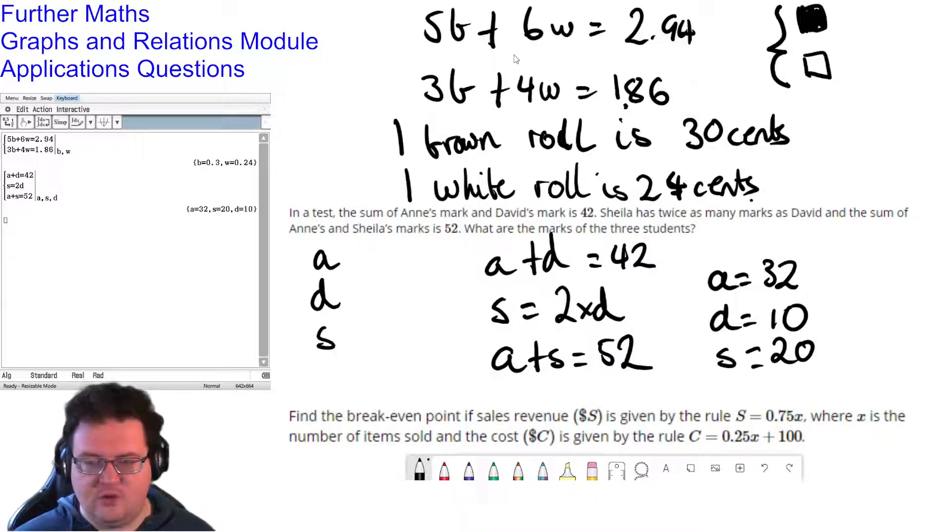So the new concept or a new application of this stuff is with what's called break-even points. When a business wants to sell something, or they want to make something to sell, they have the costs associated with making the thing, and then they have the profit, or then they have the amount of money they make per thing. It might cost me a certain amount of money to actually make my things, but then I sell them at a different price and I can make a profit. The break-even point is how much I need to sell so that my two equations are balanced.